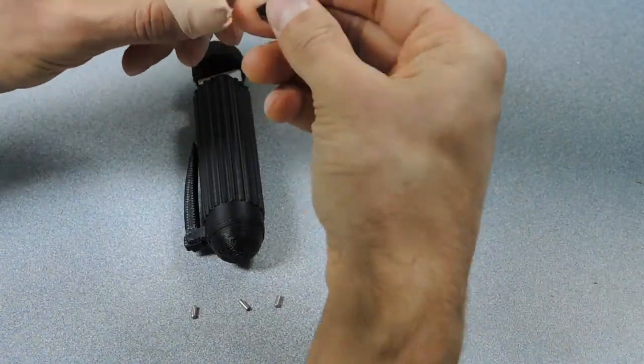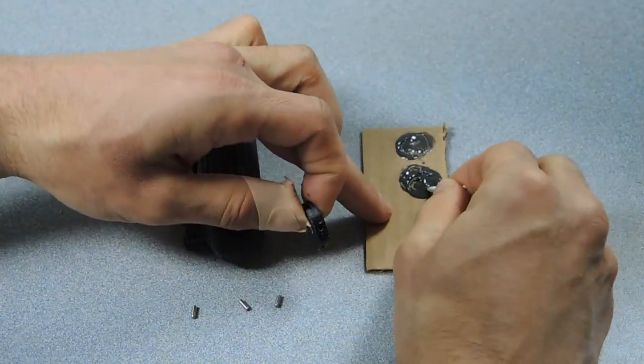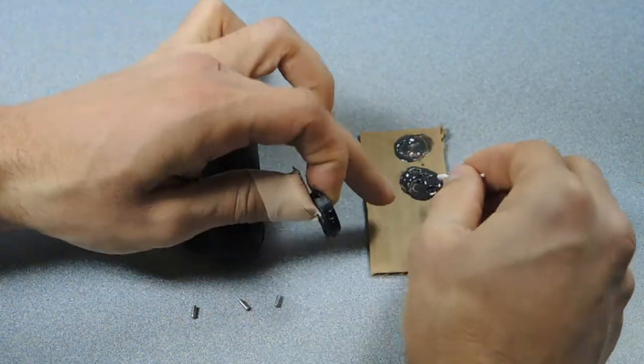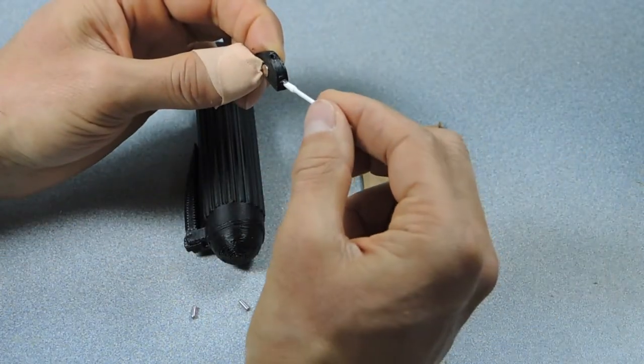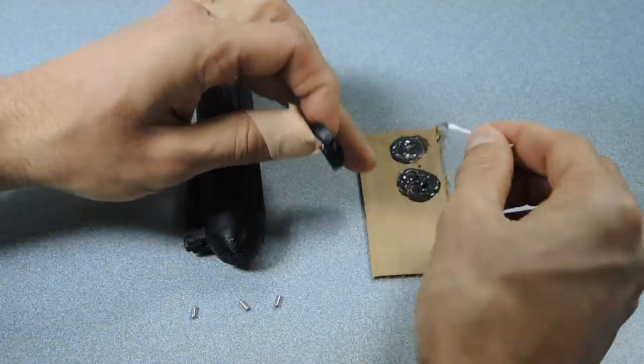First I'm gonna add epoxy to each of the dowel pin holes so that the dowel pins will be bonded in place once they're inserted. Then I'm going to apply epoxy to the whole half moon perimeter of the hard stop.